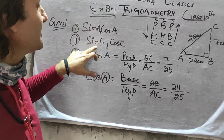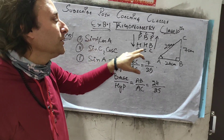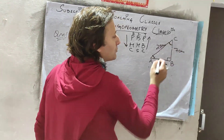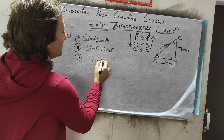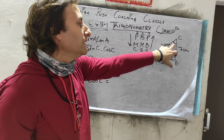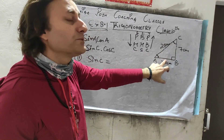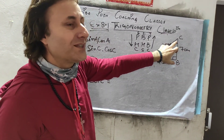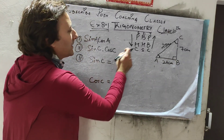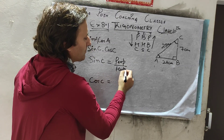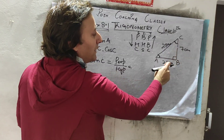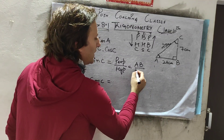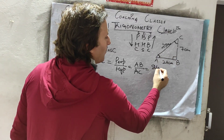Now for the second part, we need sin C and cos C. The angle has moved to vertex C. The opposite side to angle C becomes the perpendicular, which is now AB. So sin C equals perpendicular upon hypotenuse, which is AB upon AC. AB is 24 and AC is 25, so sin C = 24/25. The hypotenuse always remains AC because it is the longest side.